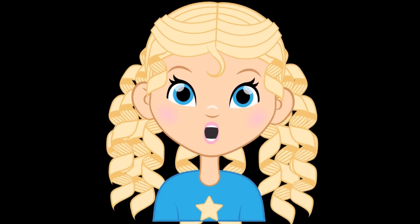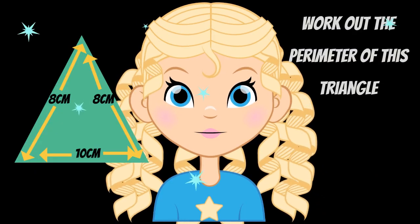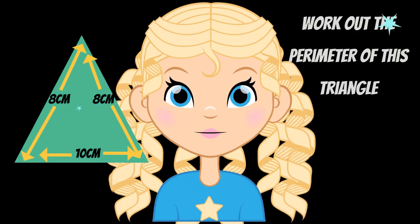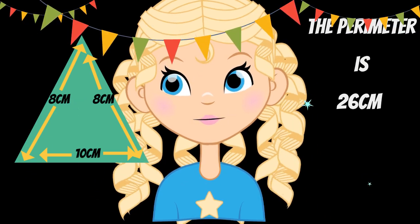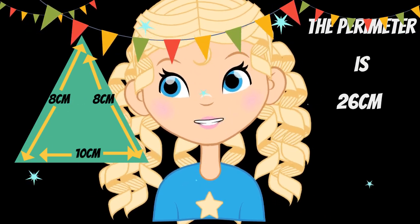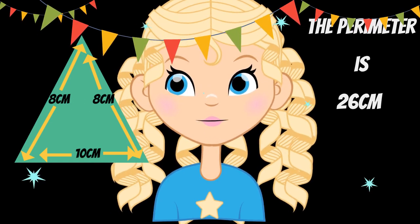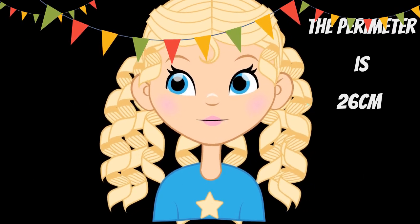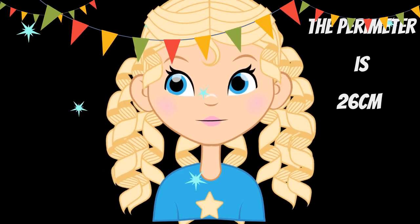Let's try an example. Can you work out the perimeter of this triangle? Did you get 26? 26 centimetres is the answer because you have to add all of the three sides. So 10 centimetres plus 8 centimetres plus 8 centimetres is 26 centimetres. So the perimeter of the triangle is 26 centimetres.